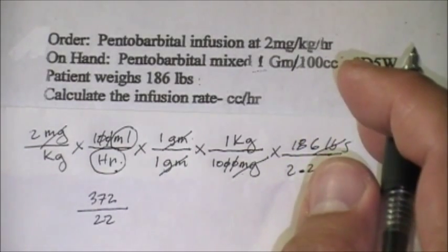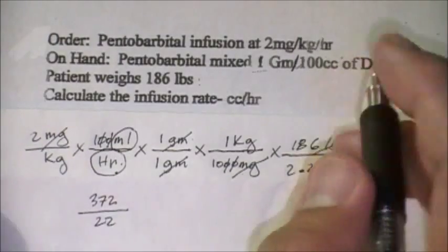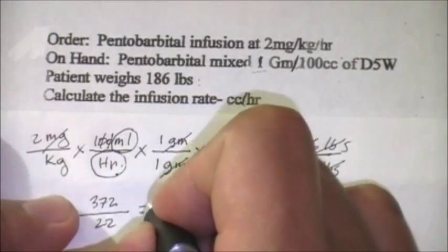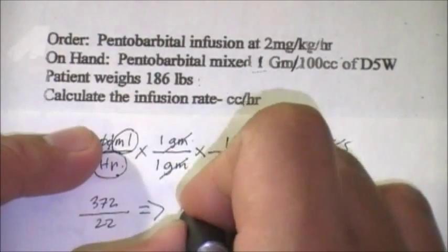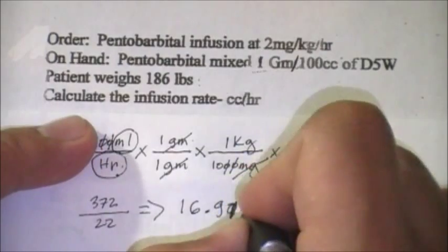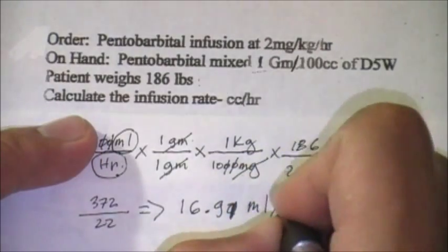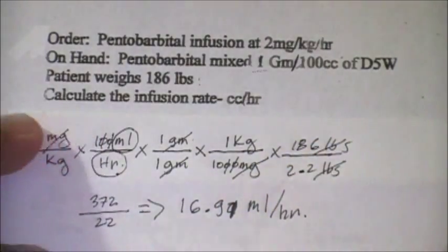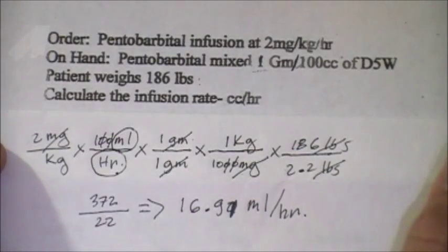So 372 divided by 22, our final answer will be 16.9 or 16.91 ml per hour. Easy peasy.